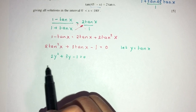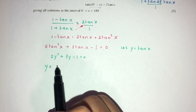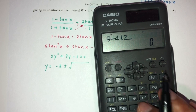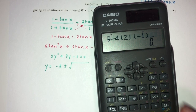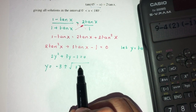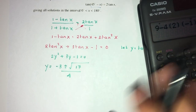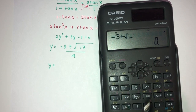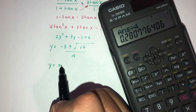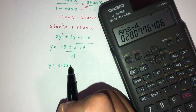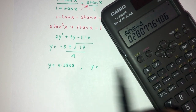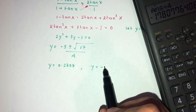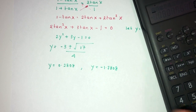We find y using the quadratic formula: y equals (minus b plus or minus root of b squared minus 4ac) over 2a. Here b squared minus 4ac gives 9 plus 8 equals 17. Dividing by 2a which is 4: y equals (minus 3 plus root 17) over 4, giving approximately 0.2808, or y equals (minus 3 minus root 17) over 4, giving approximately minus 1.7808.